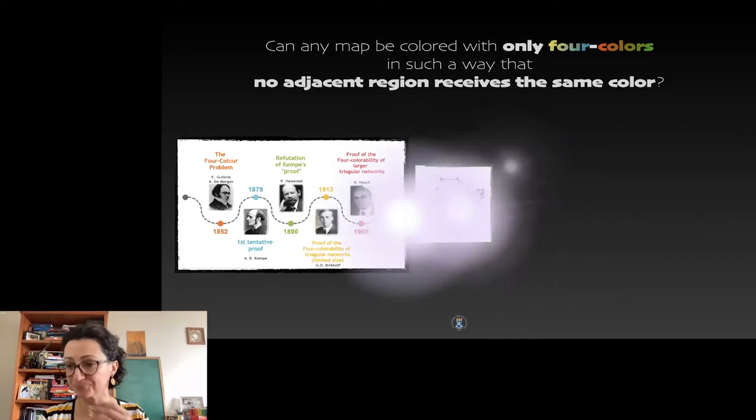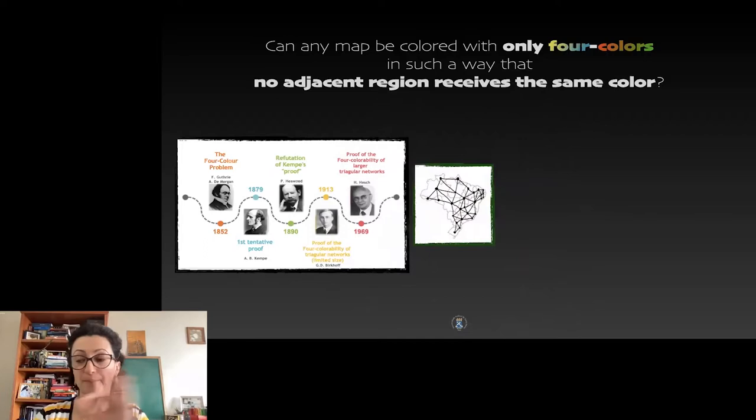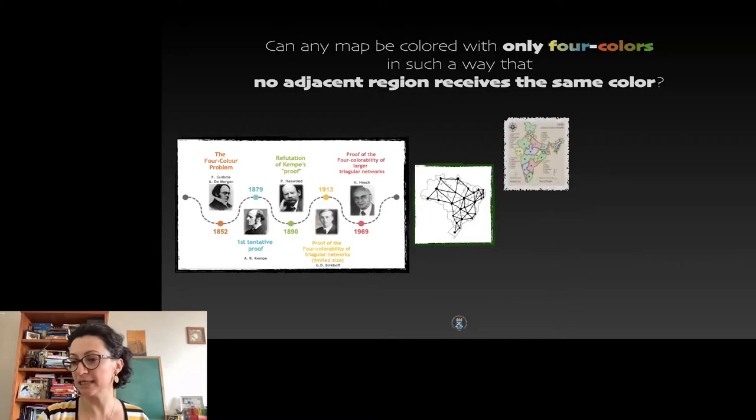A crucial aspect of the Four Color problem, not the proof yet but the problem, is its formulation in the language of graphs. A map can always be seen as or translated into a graph with a vertex for each region and an edge for each pair of regions sharing a border, as we can see in the maps of Brazil and India here in the slide. This representation of a map makes the use of computers in the proof possible.